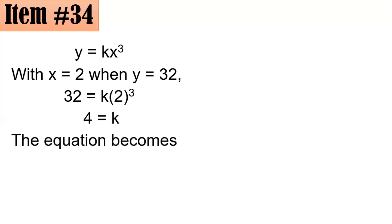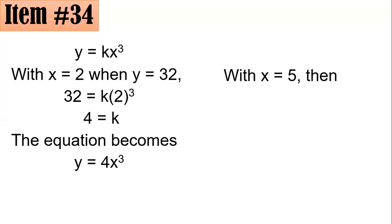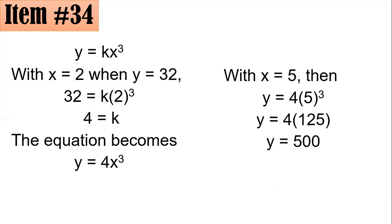Now substituting k equals 4, the equation of variation is y equals 4x cubed. When x equals 5: y equals 4 times 5 cubed. Since 5 cubed is 125, y equals 4 times 125, which is 500. So when x is 5, y equals 500 — letter D.